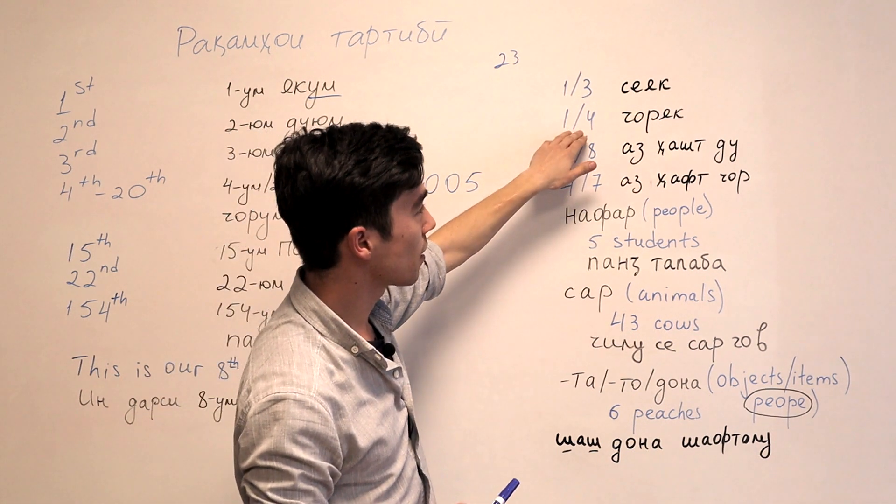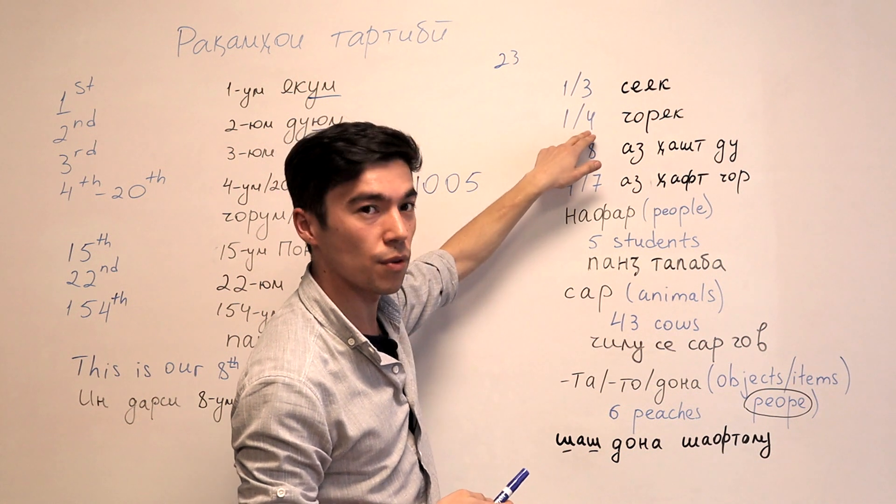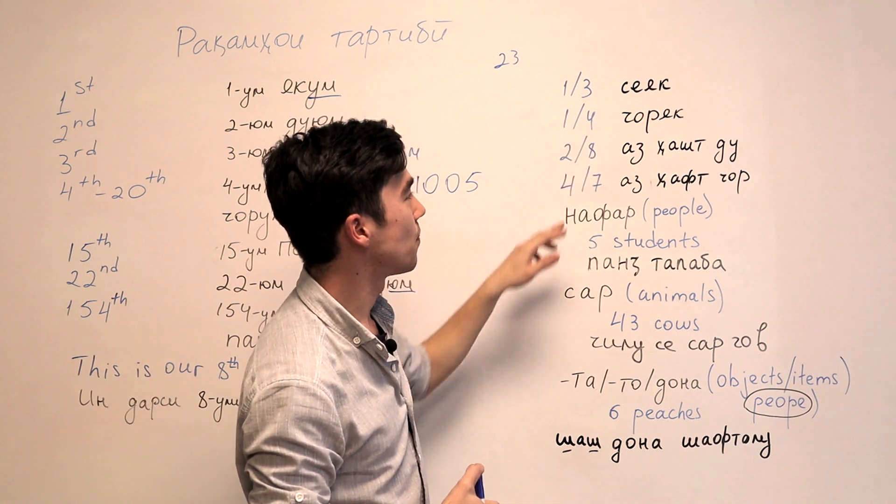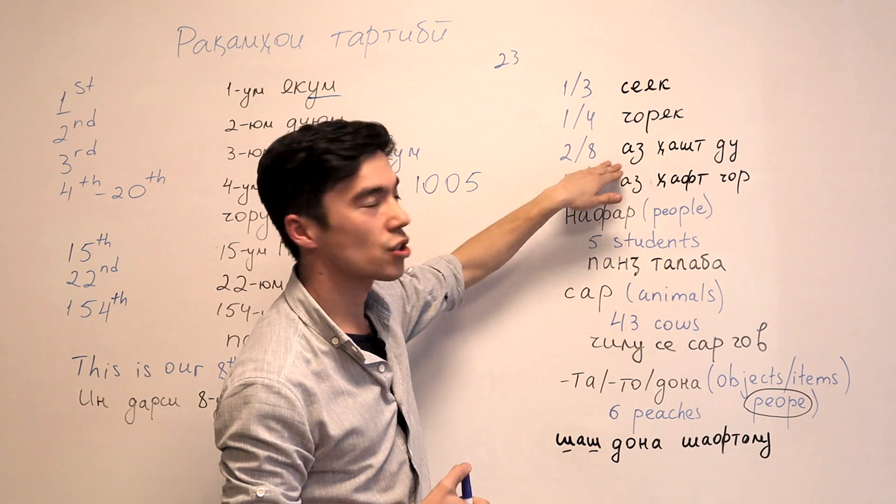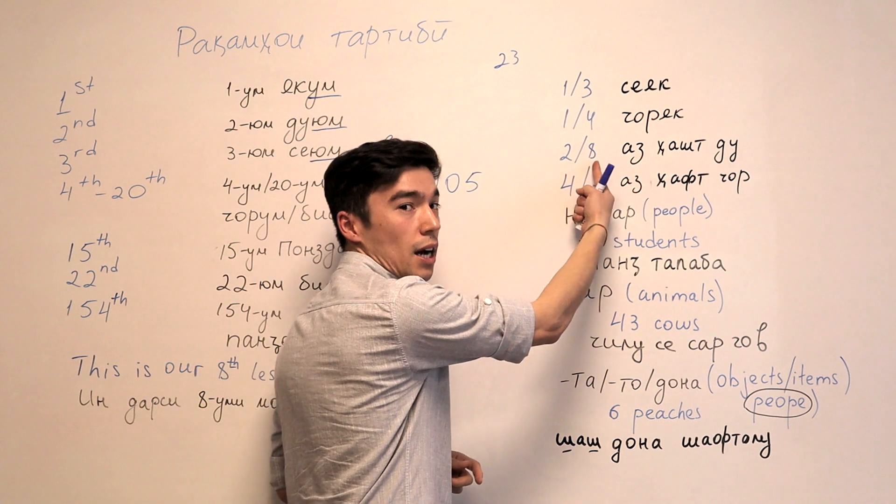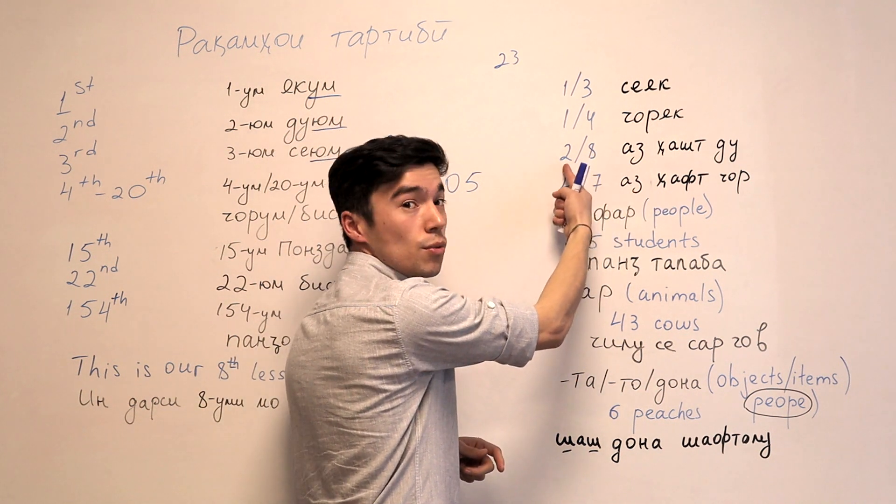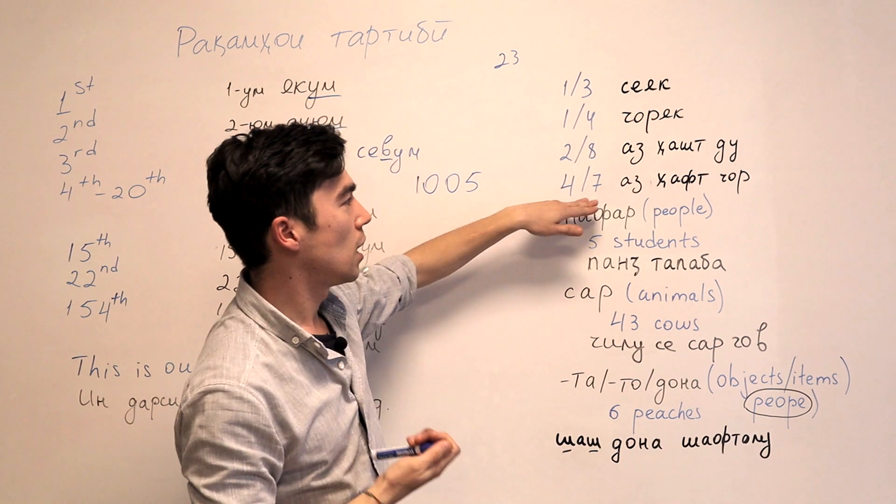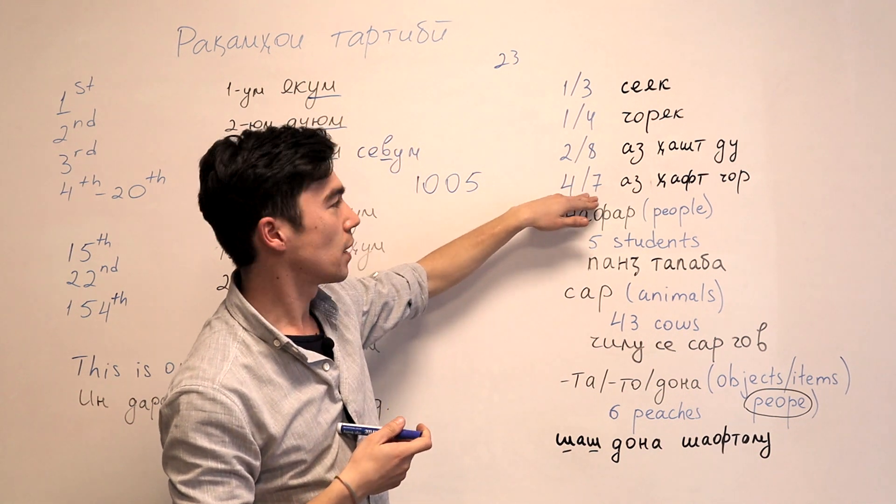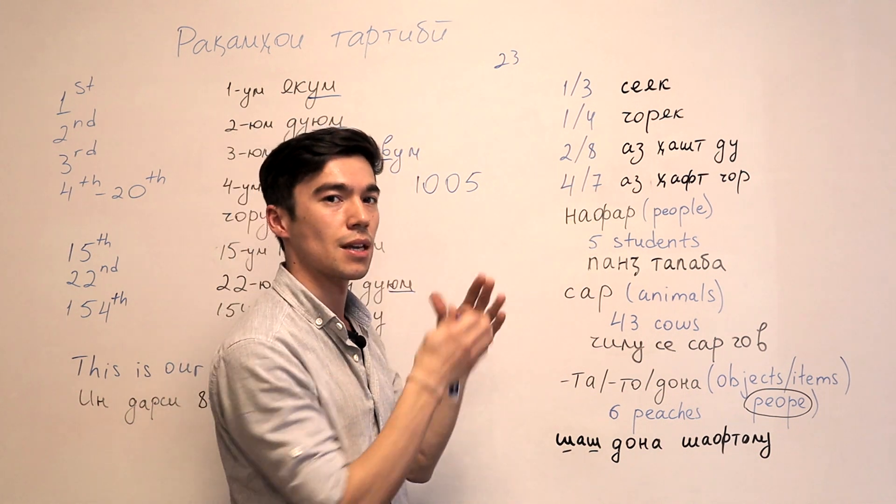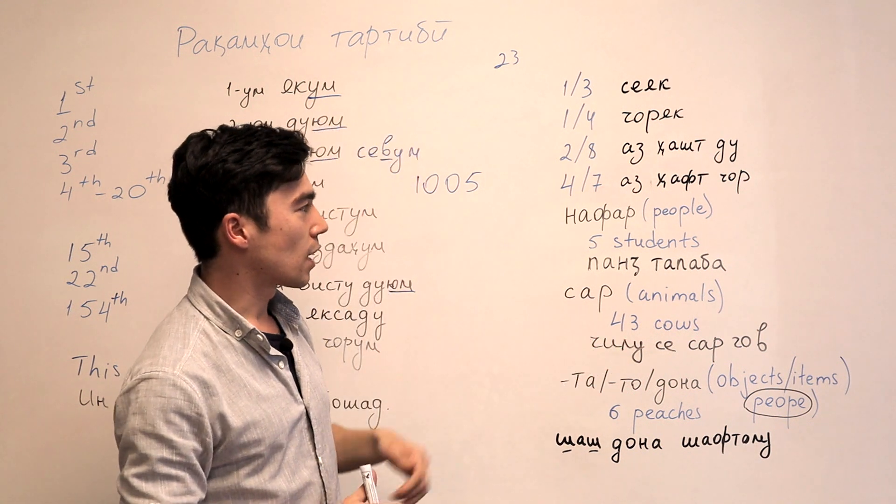So CHORIAK. It's one fourth. CHORIAK. And then this one is ASHAŠT DU. Again, first you say HASHT. EIGHT. And then TO. DU. ASHAŠT DU. ASHAVT CHOR. ASHAVT CHOR HISSE. Sometimes we say HISSE. ASHAVT CHOR HISSE.